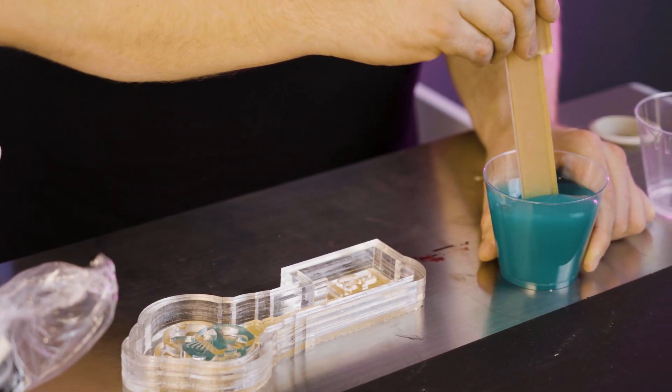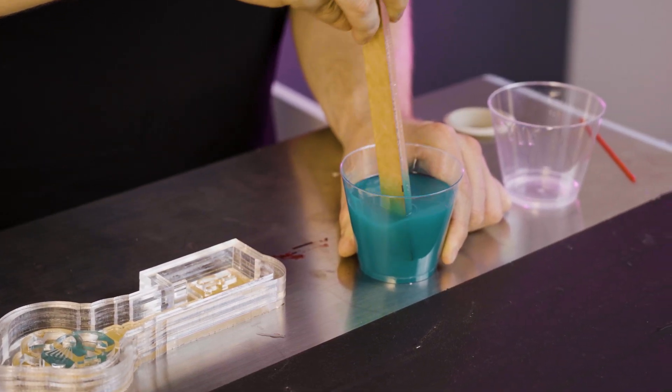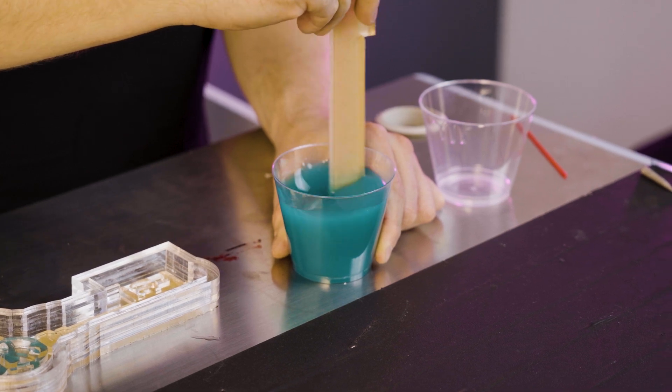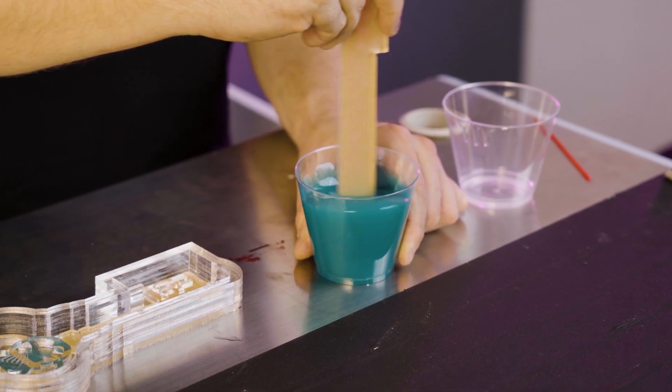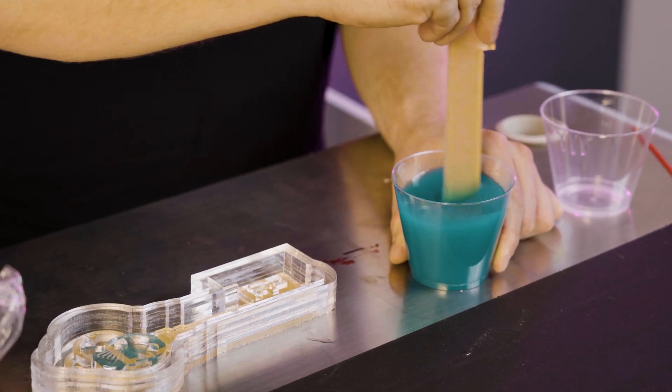Silicone likes to stick to the edges. So you want to run your stir stick around the edges and the bottom. Just continue to stir and mix everything nice. You don't want any uncured silicone.